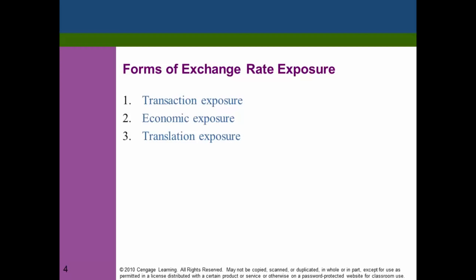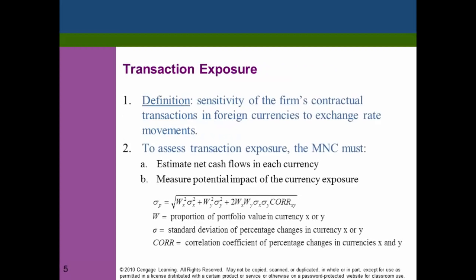What are the forms of exchange rate exposure? The first is transaction exposure, which looks at the different transactions undertaken by the firm and how they are exposed. The second is economic exposure, and the third is translation exposure. Chapter 11 covers transaction exposure, and Chapter 12 deals with economic and translation exposure. Let's talk about transaction exposure now.